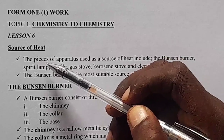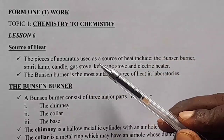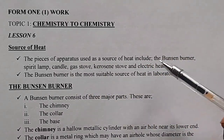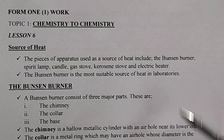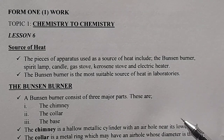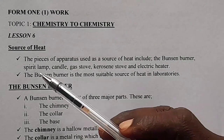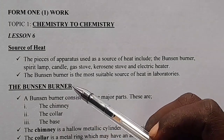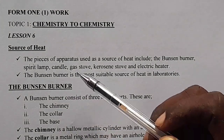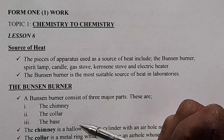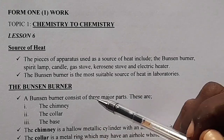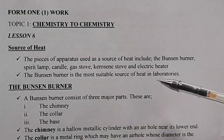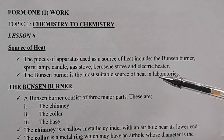The pieces of apparatus used as a source of heat in the laboratory include the Bunsen burner, the spirit lamp, the candle, the gas stove, the kerosene stove, and the electric heater.